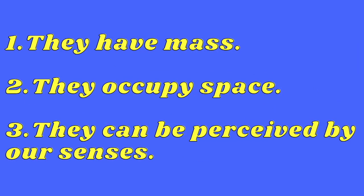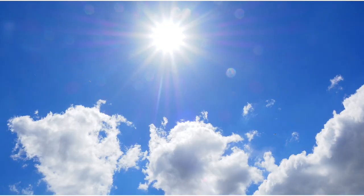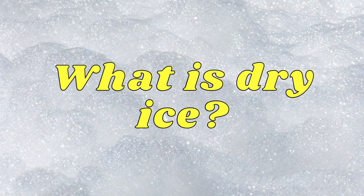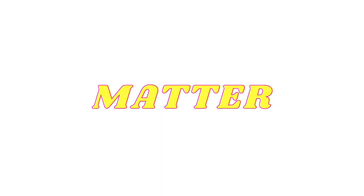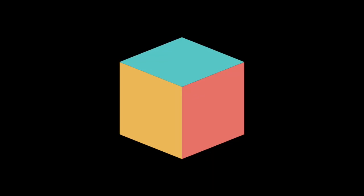Things that have mass, occupy space, and can be perceived by our senses are called matter. As we all know, not all types of matter are the same. From the examples around us, we can divide matter into solids, liquids, and gas. Though there are two other states — Plasma and Bose-Einstein Condensate — which are found at extreme temperatures, we are only going to study solids, liquids, and gas.